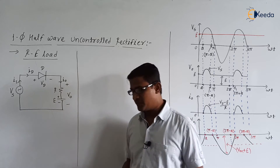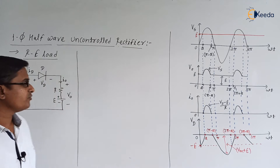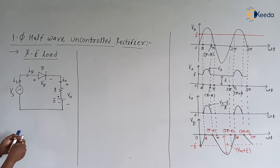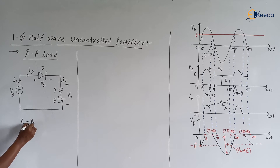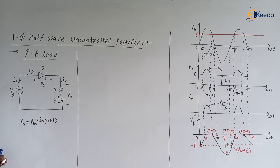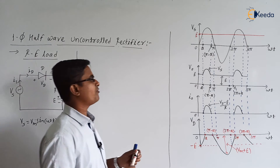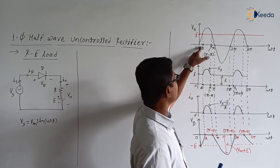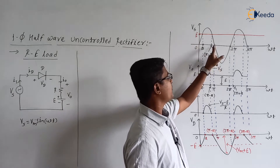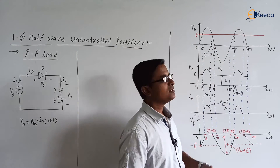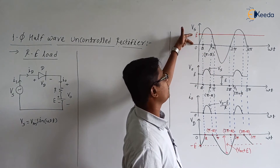Vs is equal to Vm into sin of omega t. For omega t between 0 to pi, Vs is positive; from pi to 2 pi, Vs is negative. If you check the Vs waveform and E waveform: Vs is positive from 0 to pi, and negative from pi to 2 pi. Suppose E is having a certain magnitude.